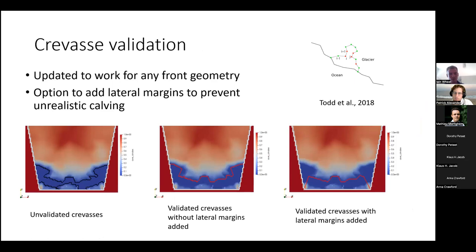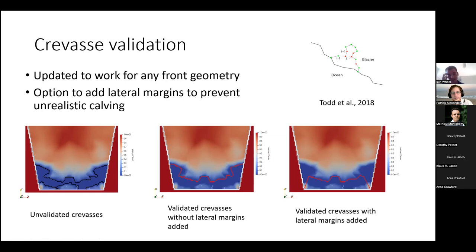In terms of crevasse validation, initially crevasses are assumed to occur along the zero contour where full thickness crevassing will occur. But you'll get bottlenecks within this method, so we need to validate the crevasses to ensure calving only occurs where the ice is capable of being evacuated. You can either include the lateral margins in this validation or not, but it's very important to do this with narrowing margins because it really suppresses and changes the calving.